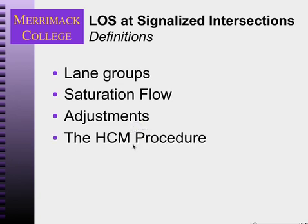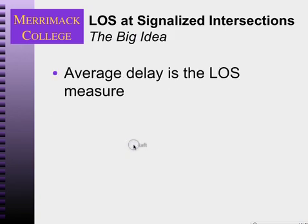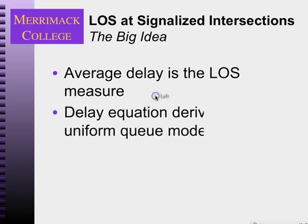So let's go through this highway capacity manual procedure. The big idea is that what we're looking for is level of service — that's the main thing. And we can find that from average delay. We talked about delays when we talked about queuing, so I'm going to review that and show you where the delay equation comes from in the highway capacity manual. It's derived from the uniform queue model, so we're assuming a uniform delay, not a probabilistic delay.